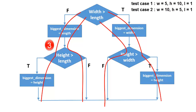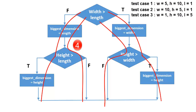Third test case: we need length greater than width, and height greater than length. We can assume width equals 1, height equals 10, and length equals 5. Fourth test case: we need length greater than width, and length greater than height. We can assume width equals 5, height equals 1, and length equals 10. The data makes sense, so answer A is correct.